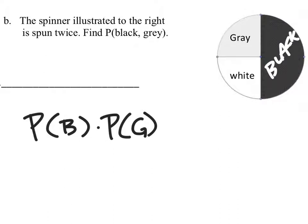So the probability of black is one half because one half of that is black. And the other half is not just gray, but half of that is, so one fourth.